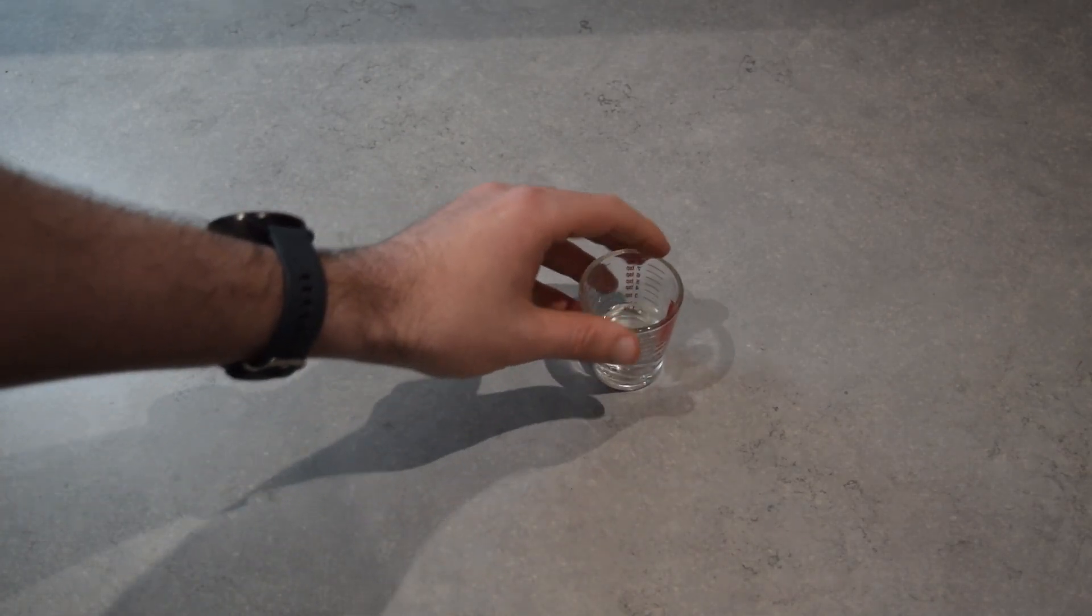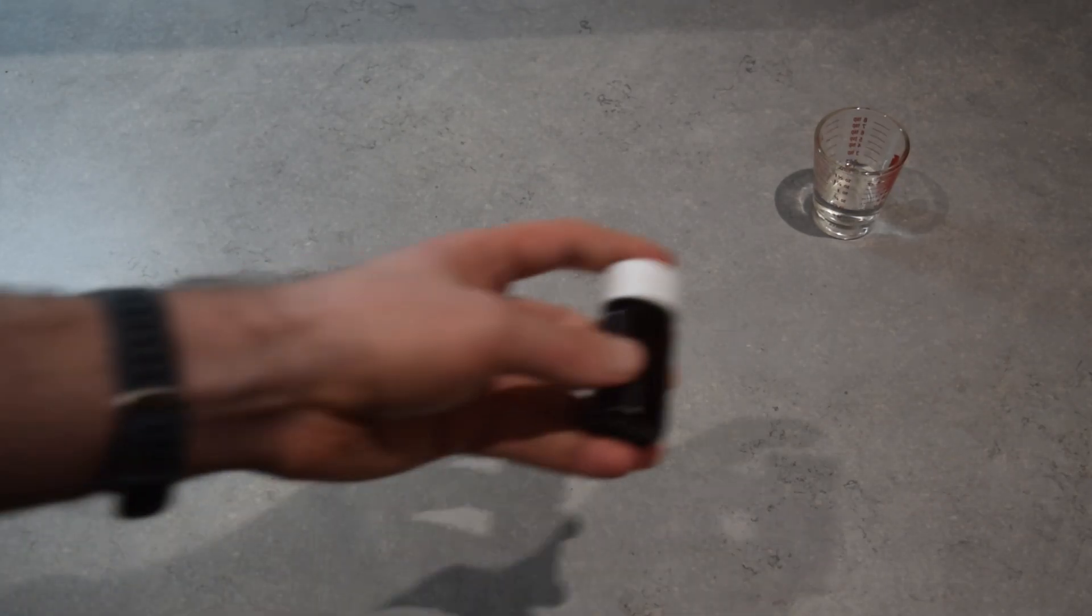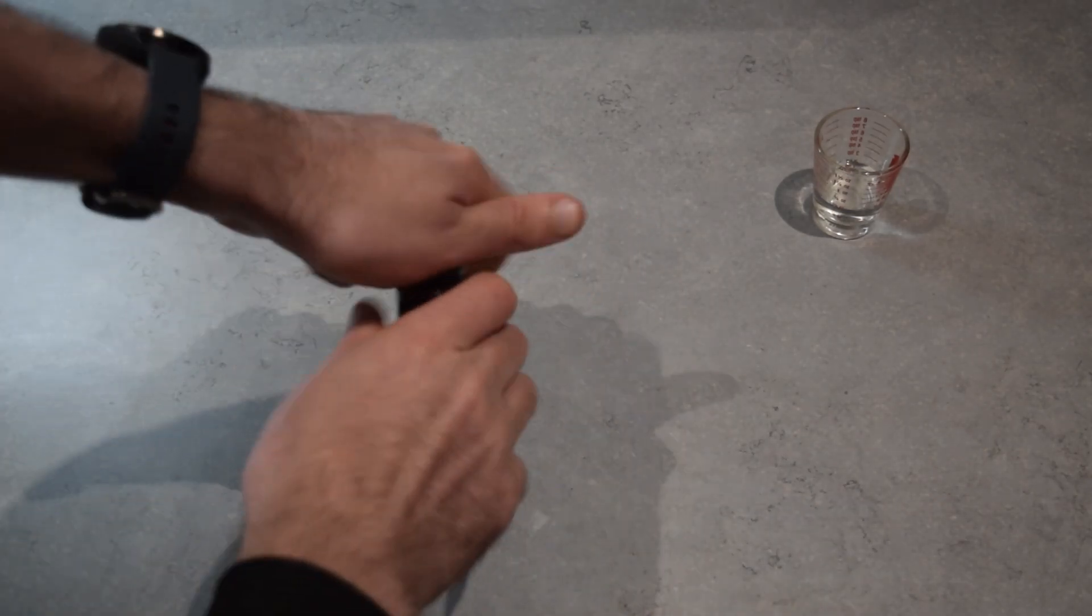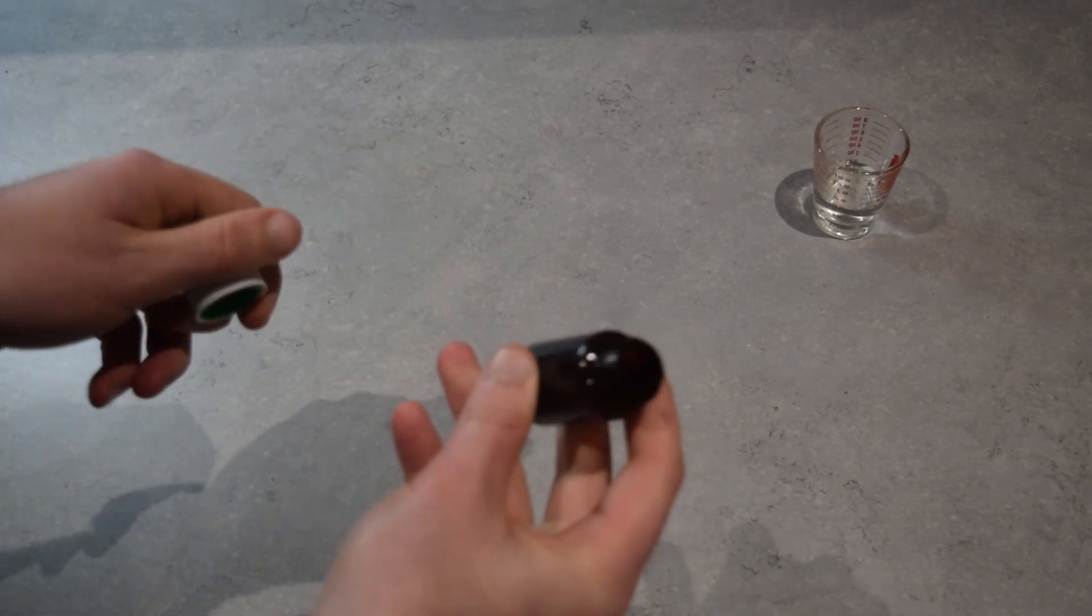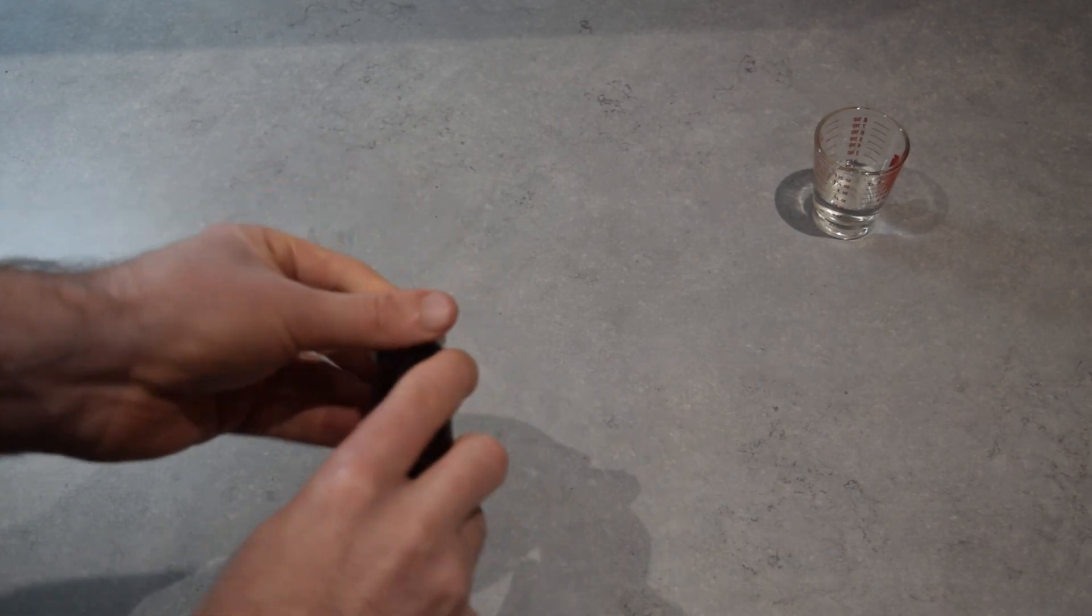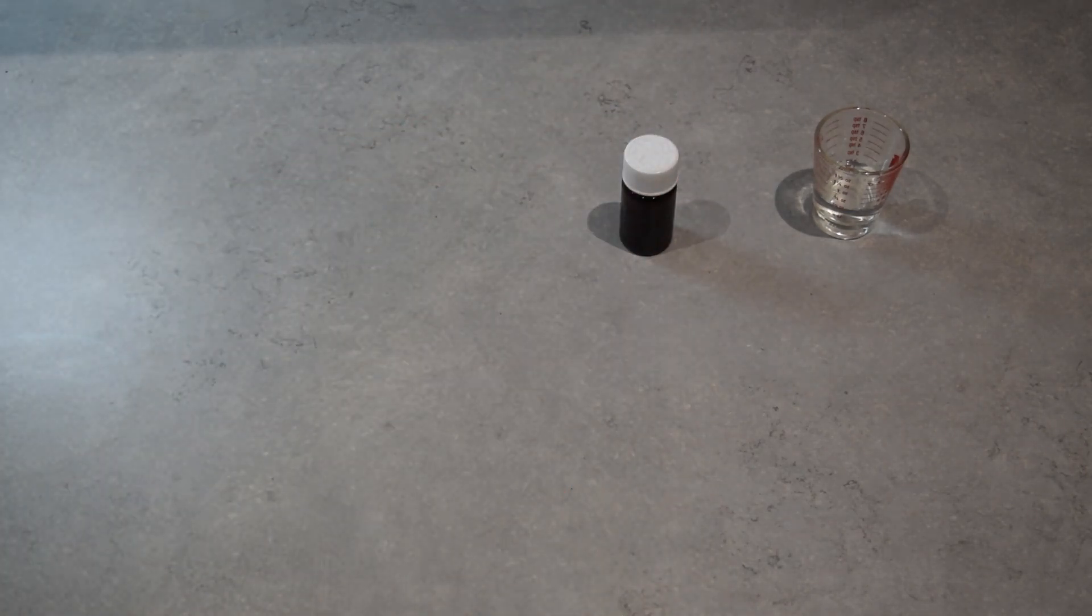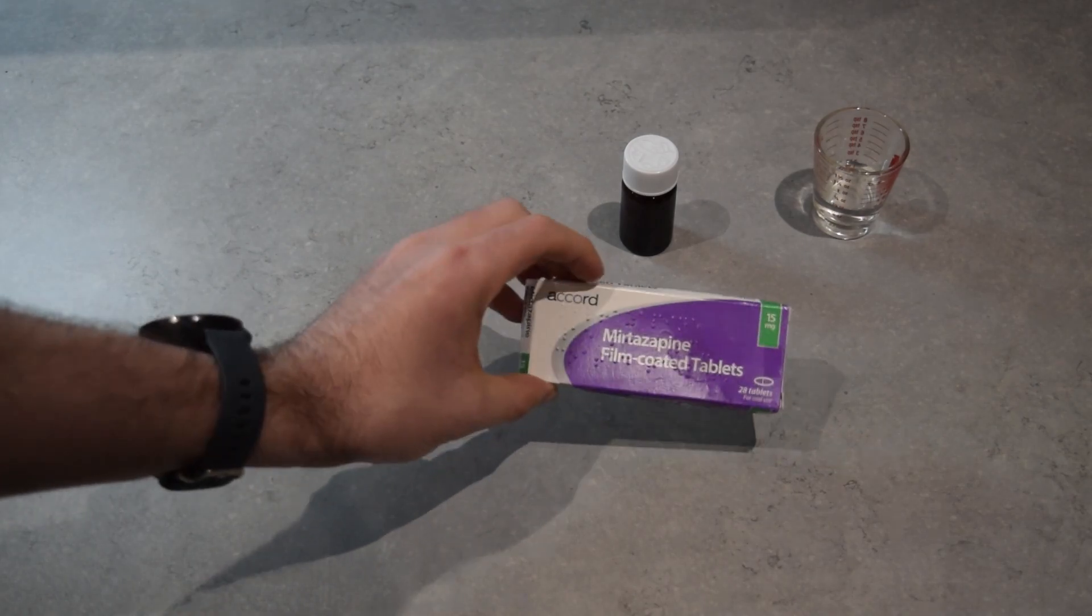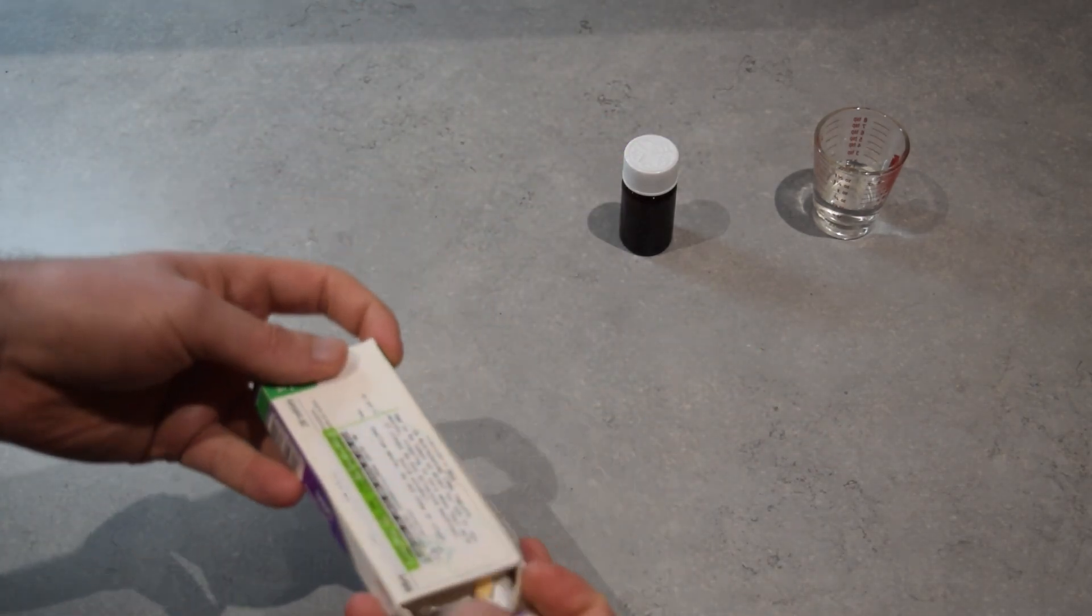So the things you'll need are, you'll need some water. There's 10 milliliters there, precisely 10 milliliters. You'll need a container. This is a childproof container to store the suspension in. You'll need your pills or your mirtazapine in this case, and these are 15 milligrams.